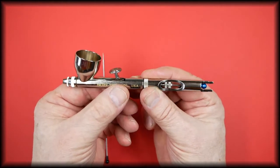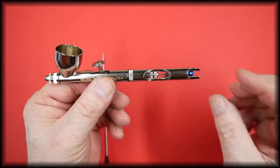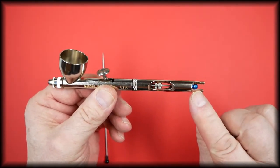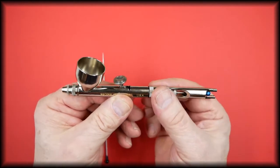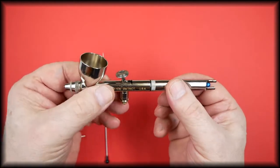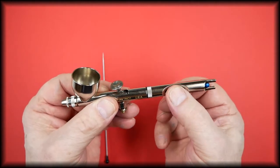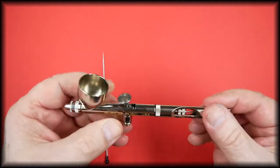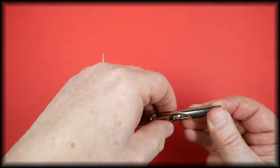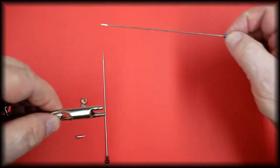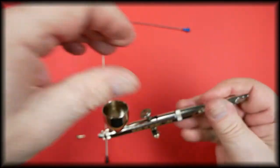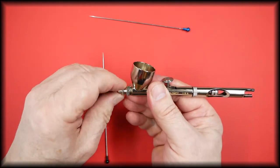This is denoted by the blue needle end. To put the point three kit into this, we will first remove the needle, the spray regulator, and the head which holds the tip in place.